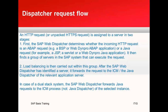Next, load balancing is carried out within this group. After the SAP Web Dispatcher has identified a server, it forwards the request to the ICM or the Java dispatcher of the relevant application server. In the case of a dual-stack system, the SAP Web Dispatcher forwards Java requests to the ICM process, not the Java dispatcher.